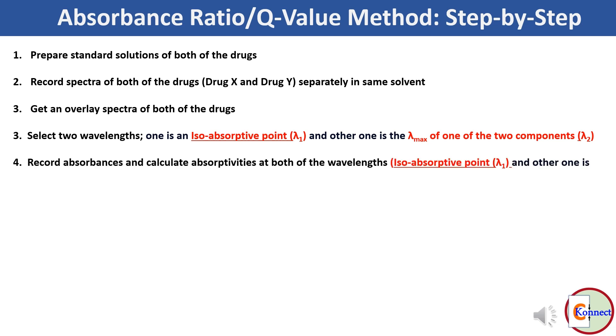Now record absorbances and calculate absorptivities at both of the wavelengths. One is isoabsorptive point, here we say it lambda 1, and another one is the lambda max of one of the two components, here we say it lambda 2.